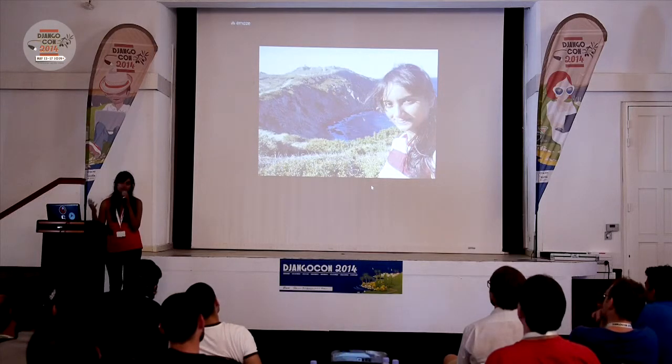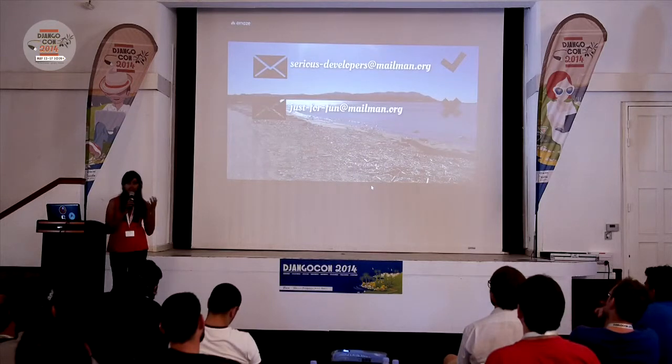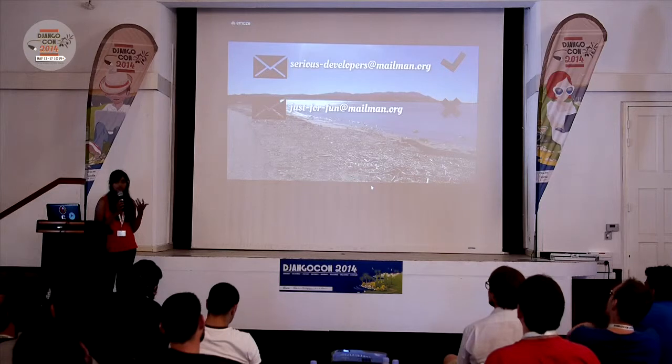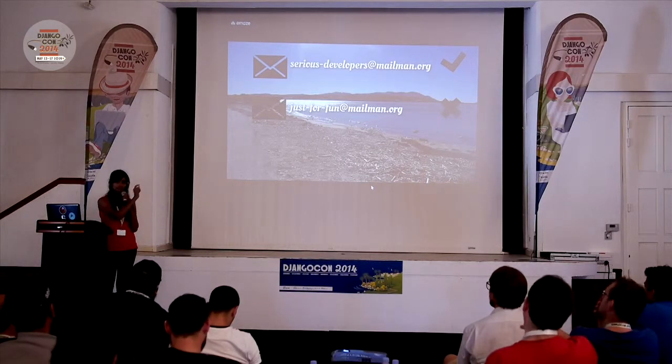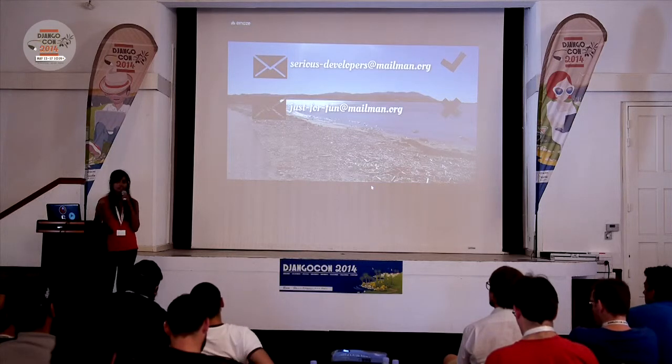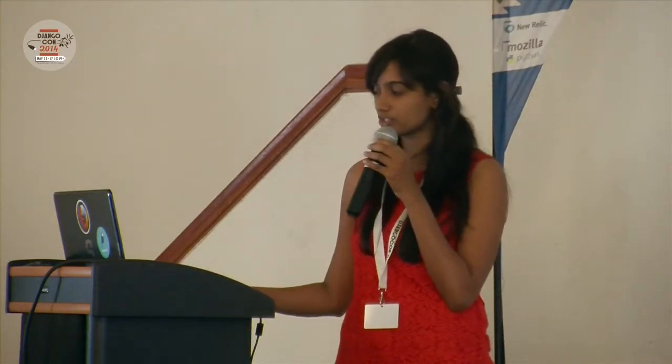You probably want to stop receiving mails from some mailing lists. I would want to continue receiving mails from Serious Developers and maybe disable delivery from the other. What I would need to do is log in twice — once into the first mailing list, change the settings and log out, then log in again into the second and do the same. This problem is amplified when you have ten different mailing lists, which is the case in open source. The solution was found in the Django documentation in the form of Formsets.